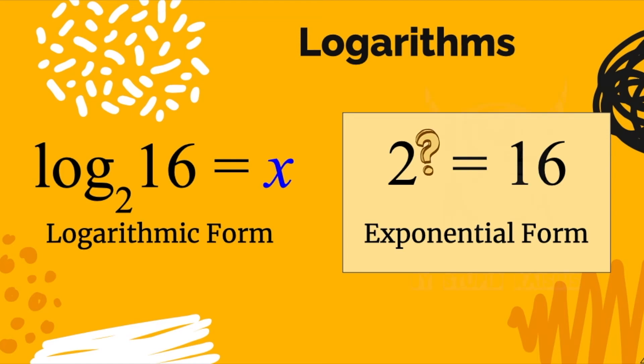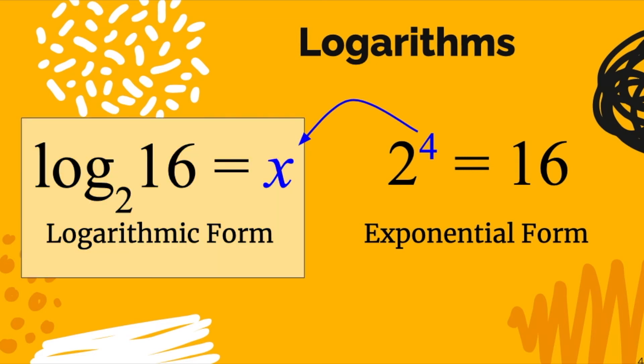Now you can just focus on the exponential form. 2 to the what power is 16? What would that be? Well, of course, it would be 4. 2 times 2 times 2 times 2 is 16. So therefore, we turn our attention back to the logarithmic form. Our answer to log base 2 of 16, remember answers to logs are exponents, so it's 4.